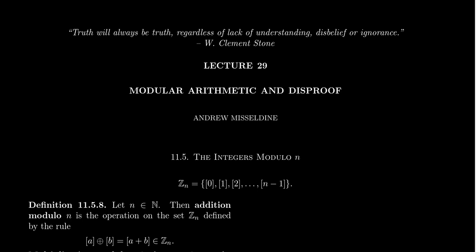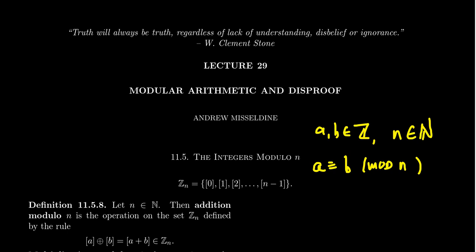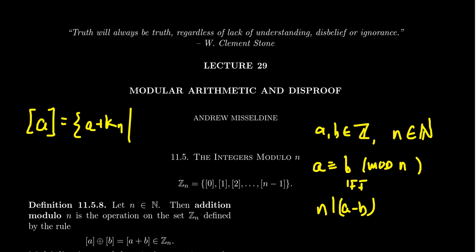Let me remind you of a few facts. Imagine we have some elements a and b, where a and b are integers, and we have some other element n, which is a natural number. Then we define a relation: a is congruent to b modulo n. This symbol means that n divides the difference of a and b.